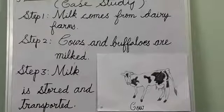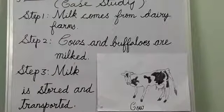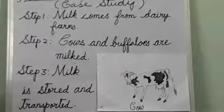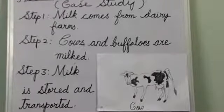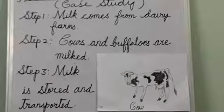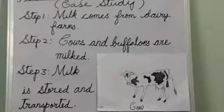Step two: cows and buffaloes are milked. When a cow or buffalo's udder is full of milk, it is ready to be milked. A milker then milks the cow either manually by hand or by using a milking machine.